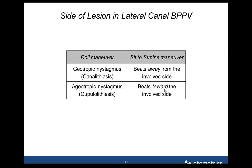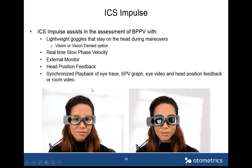Now I will give the podium to my colleague Wendy to describe some of the system's capabilities. We're talking about the ICS Impulse and the positional module, which we'll be releasing in May 2015. The ICS Impulse can assist you in assessing BPPV. It's a very lightweight goggle — only 60 grams — which makes it great for these head position maneuvers. It stays snug to the face so the goggles remain in place as you move the head back or to the side. We're also releasing in May the vision-denied solution, so you can perform the test with or without vision.